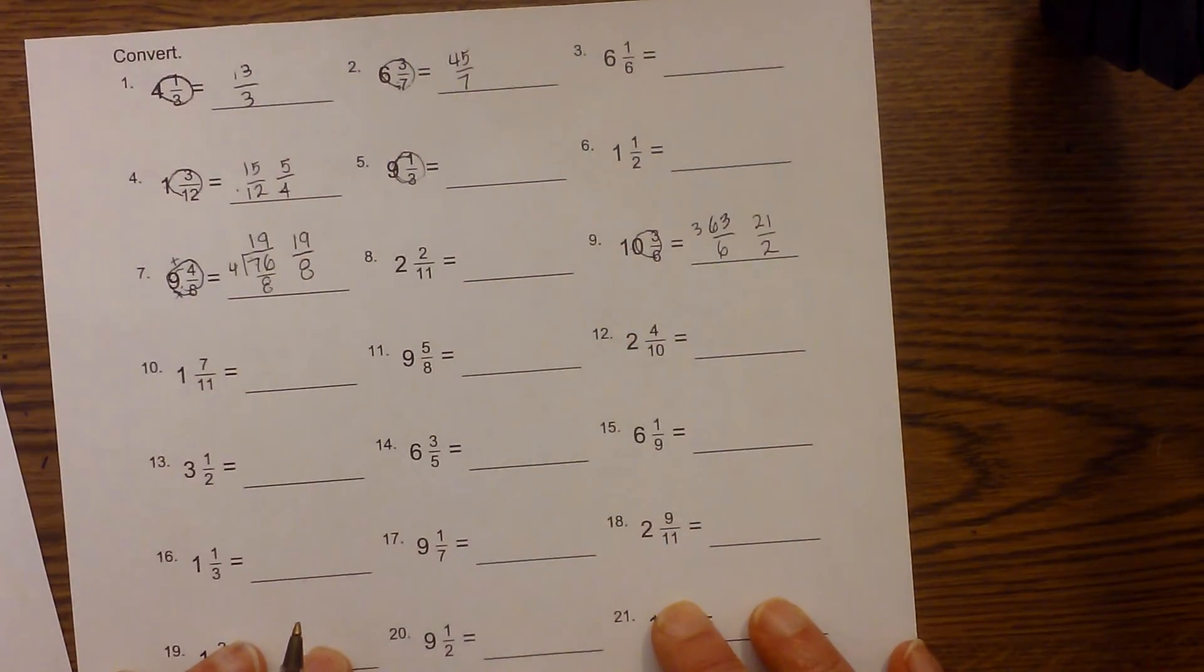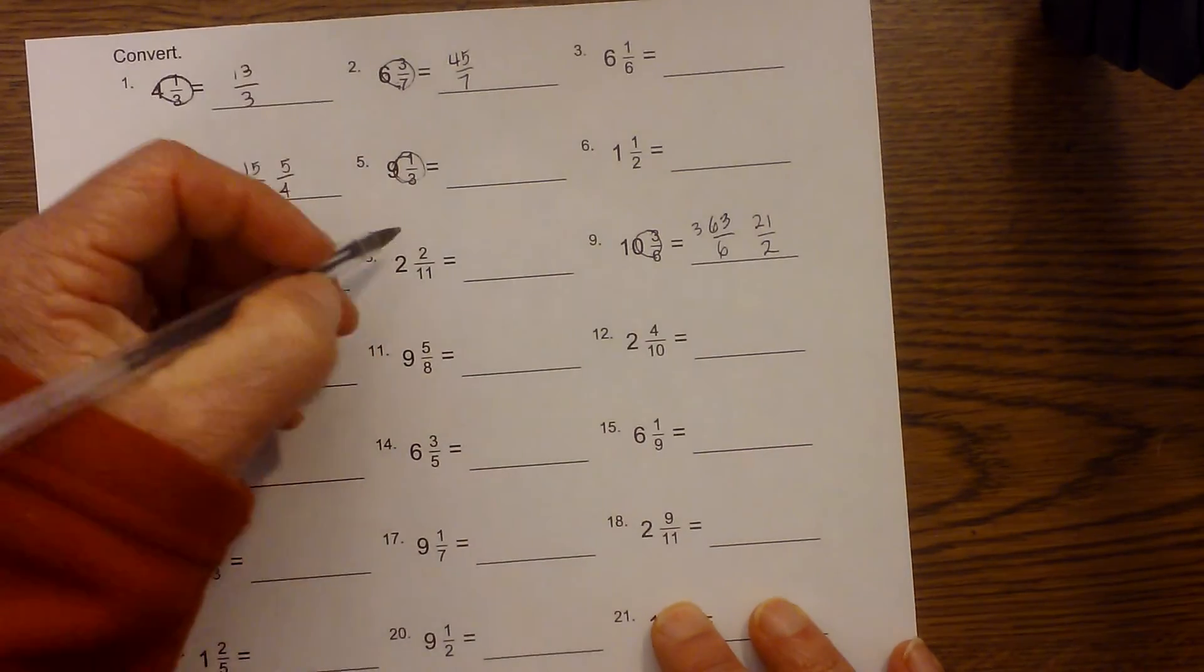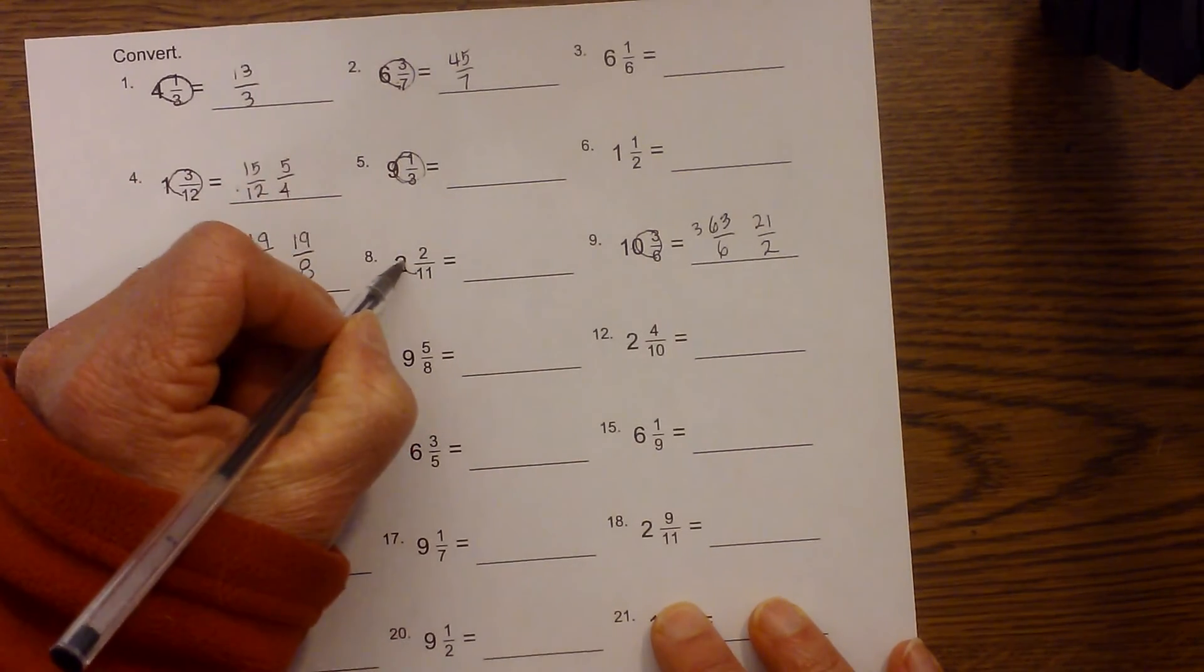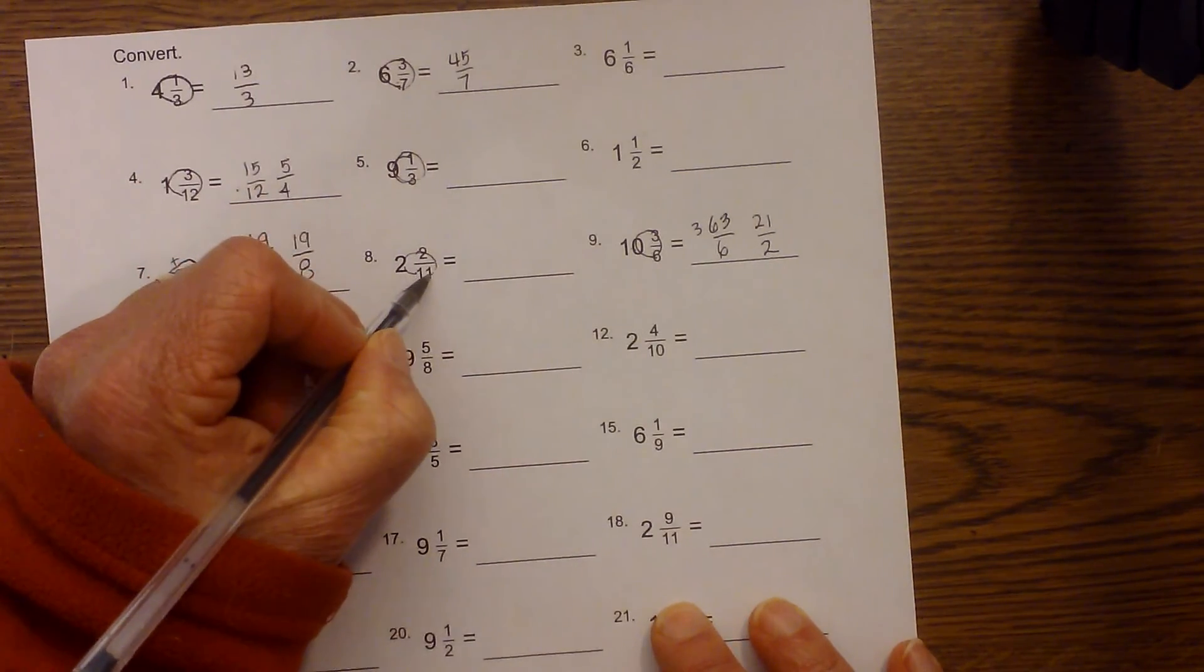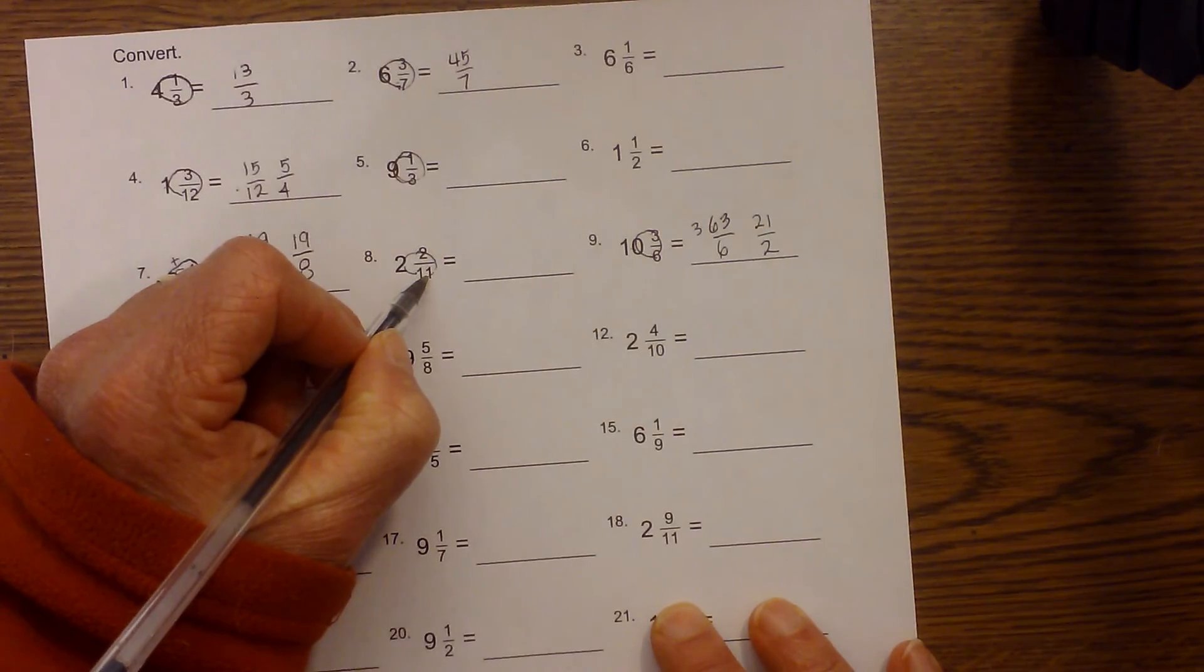I hope the circle trick helped you with improper fractions. One more time: multiply then add, and the denominator goes all the way around.